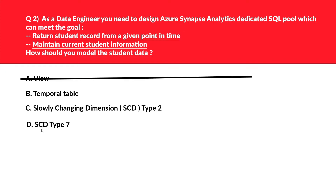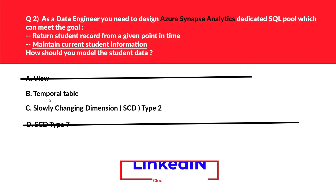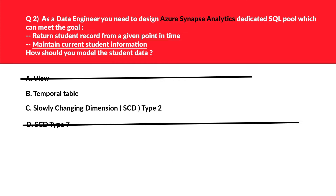Let's now look at option D — SCD type 7. If you see anything apart from SCD type 2 in the real exam, these are probably distractors. Questions will test you mostly on SCD type 2 based on my experience, so we'll reject SCD type 7. Let's now look at option B, temporal table. Temporal table is like a delta table, but the problem is it's not supported in Azure Synapse Analytics yet, hence it's an incorrect choice.